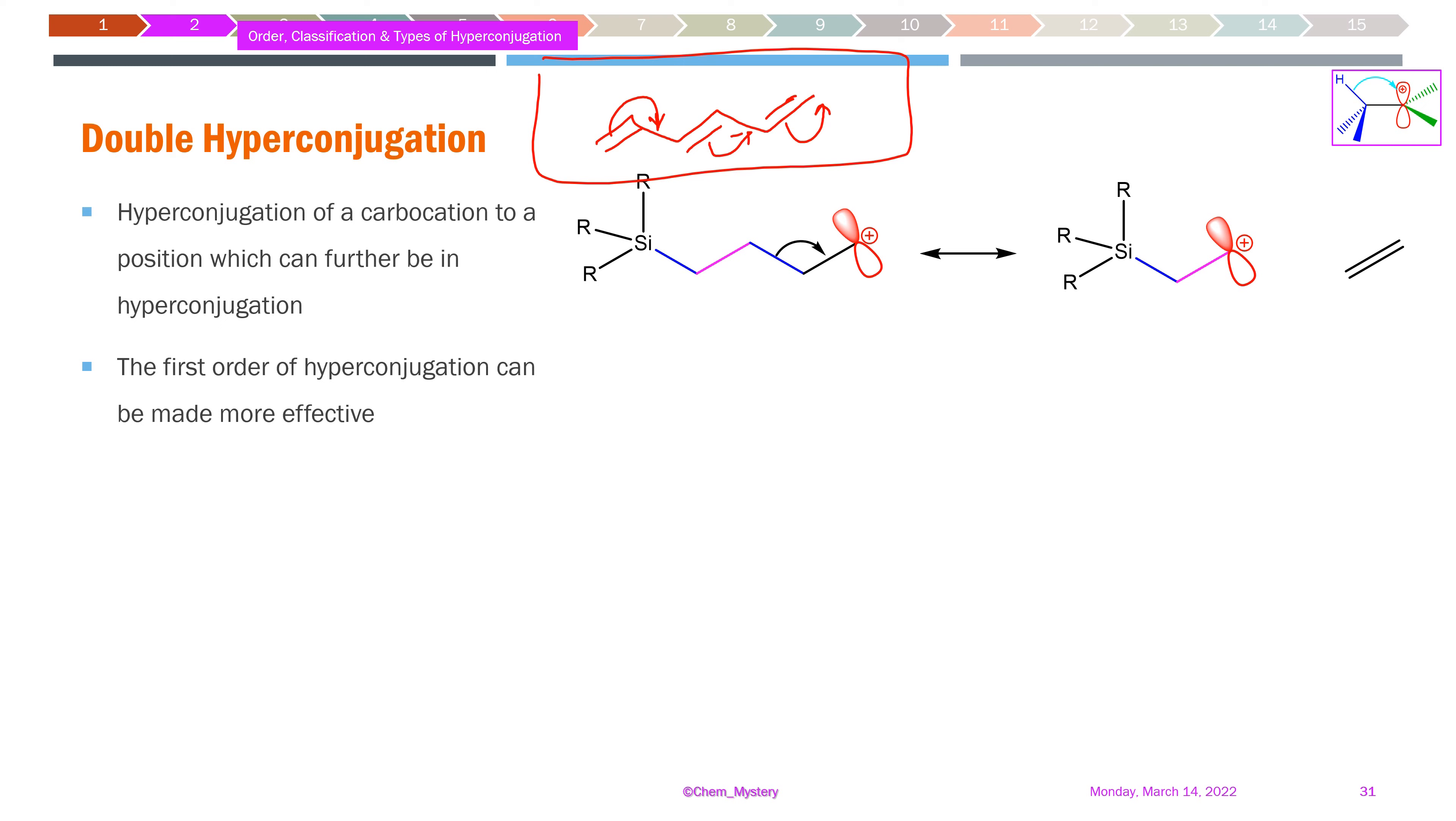This delocalization is not very efficient on its own, but it becomes much more effective through double hyperconjugation.